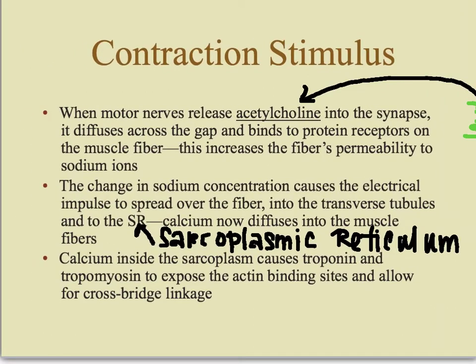When motor nerves release acetylcholine — often abbreviated as ACh — into the synapse, it diffuses across the gap between the nerve and the muscle fiber itself and bonds to the muscle fiber. That causes the muscle to allow in lots of sodium, which is a positively charged ion — lots of sodium seeping into the muscle. That change in concentration, the increase in positive charges flooding in, causes an electrical impulse.